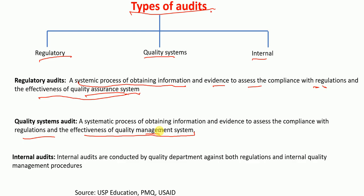The final audit type is the internal audit. As the name suggests, these audits are conducted by the quality department of the company against both regulations and internal quality management procedures. These audits are conducted by the companies themselves or by other companies they hire to perform such audits. The purpose is to ensure that regulations and internal quality management procedures are fulfilled, and they are performed by the quality assurance department.